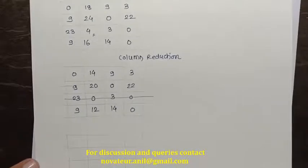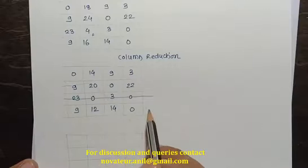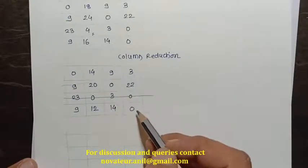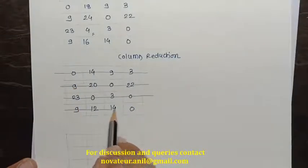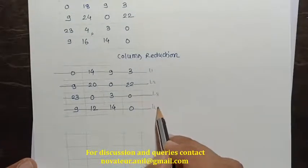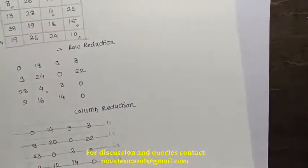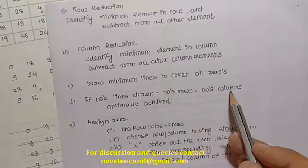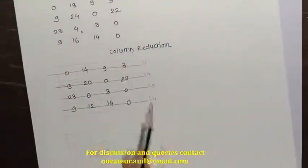Going through each row — row 1, row 2, row 3 — each covers a single zero, so we draw lines one, two, three, and four. Now we check the optimality condition: if the number of lines drawn equals the number of rows equals the number of columns, we have reached optimality. That means we have achieved the maximum possible reductions for this problem.